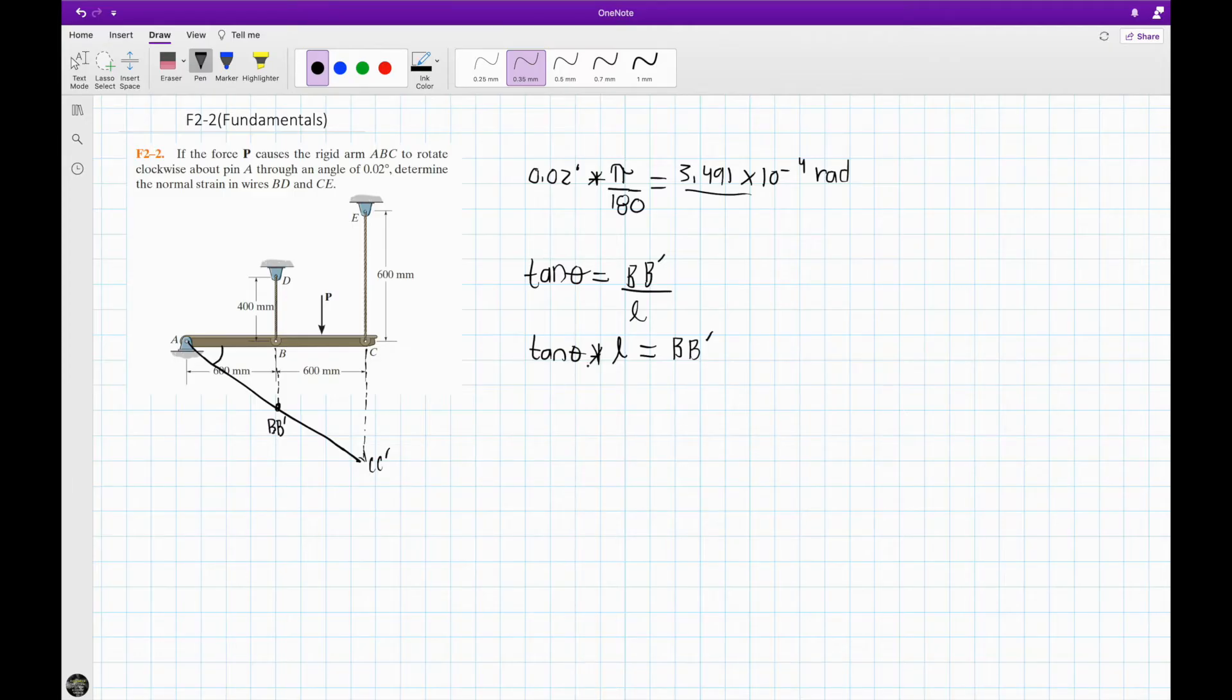So we have a length of 600 millimeters. Multiply it times your radians because we don't have the angles anymore. So we just multiply 3.491 times 10^-4 radians. Put this in the calculator. I know BB dash is going to give us 0.209 millimeters. This is our BB dash.